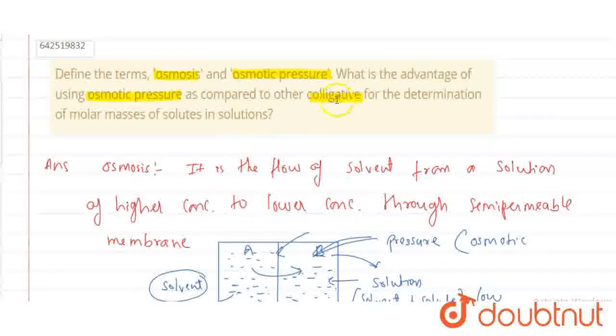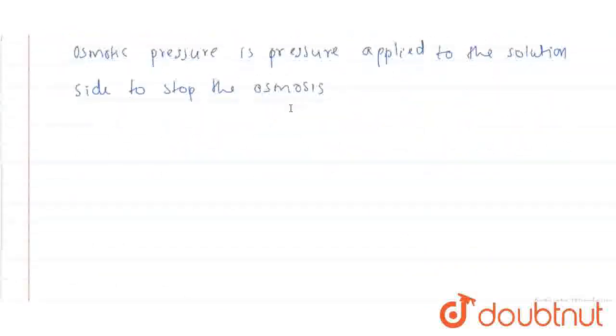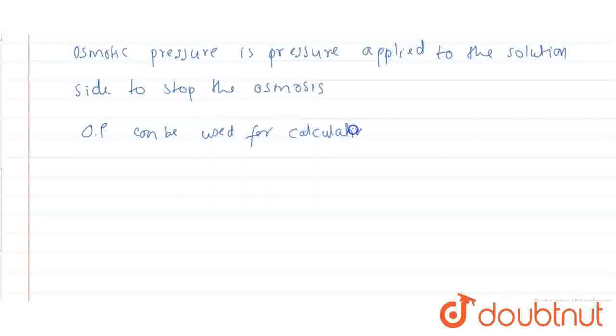Now, coming to the other part, what are the advantages of osmotic pressure as compared to colligative properties? So osmotic pressure can be used for calculating molar mass of dilute solution at low temperature.